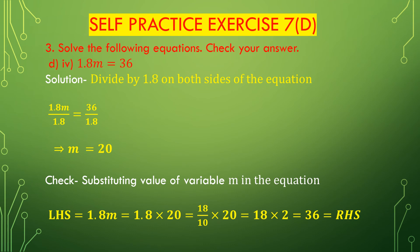Now we solve question 4d: 1.8m = 36. Here 1.8 is multiplied with m, so we have to divide by 1.8 on both sides. We get 1.8m divided by 1.8 = 36 divided by 1.8. The 1.8s cancel and we get m = 36 divided by 1.8. Since 1.8 is 18 divided by 10, we get 36 divided by (18/10).